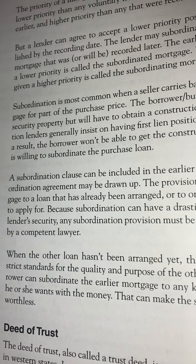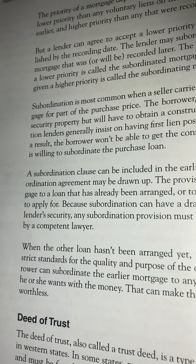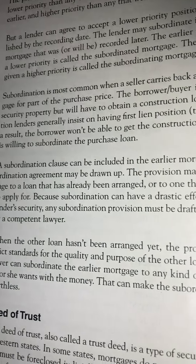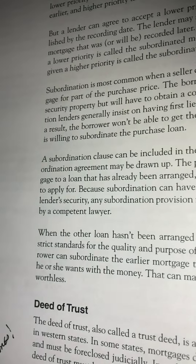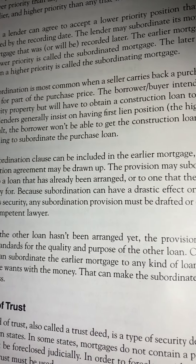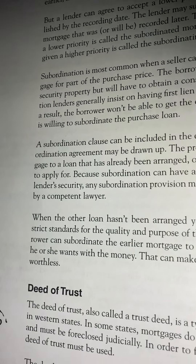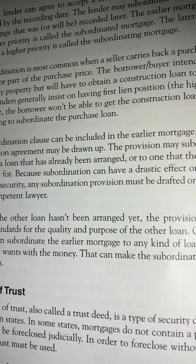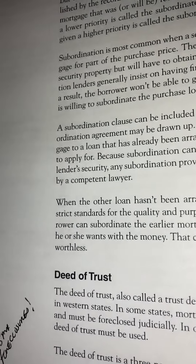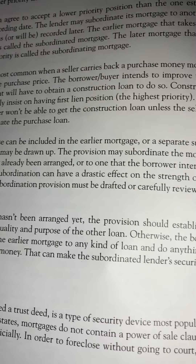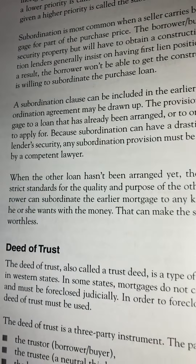A subordination clause can be included in the earlier mortgage, or a separate subordination agreement may be drawn up. The provision may subordinate the mortgage to a loan that has already been arranged or to one that the borrower intends to apply for. Because subordination can have a drastic effect on the strength of a lender's security, any subordination provision must be drafted or carefully reviewed by a competent lawyer.